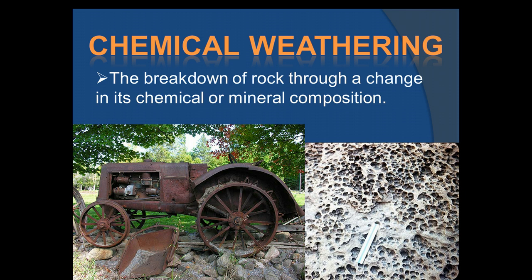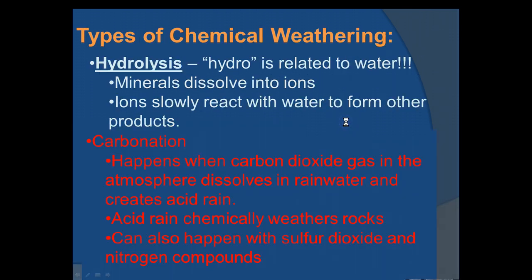Then we get into chemical weathering — things that rust are a great example. A rusting tractor is chemically changed, so it's a chemical change. Hydrolysis is related to water. Last year you may have learned that dissolving is a physical change, but when rock material dissolves in water, it enters solution and can then react with other chemicals in the water — which is why rock dissolving in water is technically considered chemical weathering.